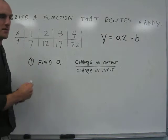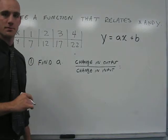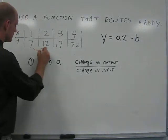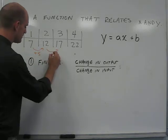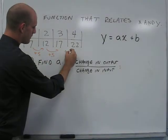The change in output can be found by comparing consecutive terms of y. We add 5. Again, we add 5. Again, we add 5.